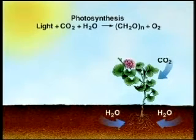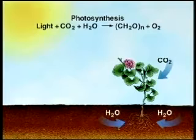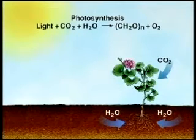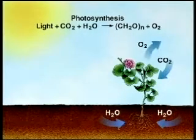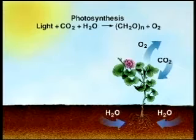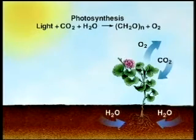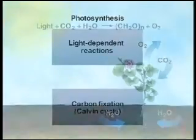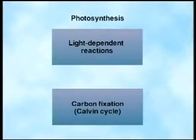The carbohydrates produced by photosynthesis are used to meet the plant's energy needs, and the oxygen produced is released into the atmosphere. Photosynthesis is a two-stage process.